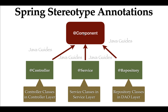@Controller, @Service, and @Repository — these stereotype annotations are specializations of the @Component annotation. Now let us understand more about these stereotype annotations with examples.